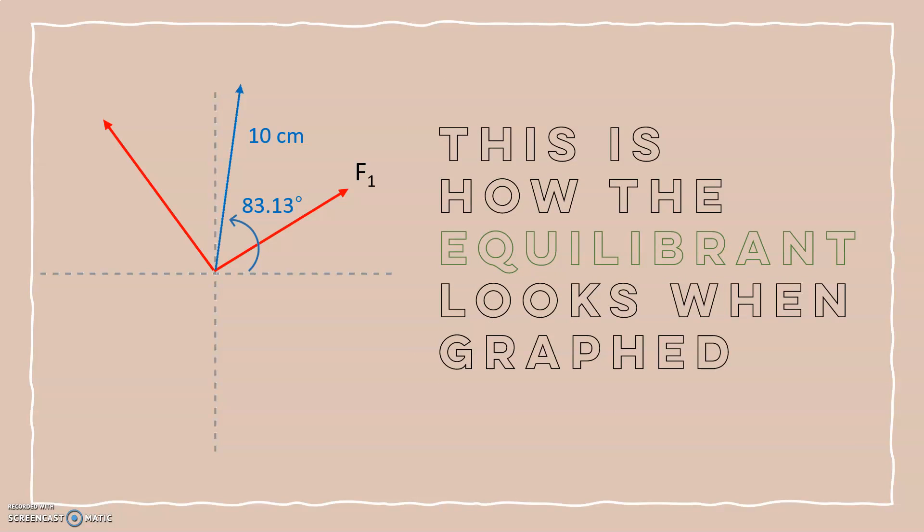This is how the equilibrium looks like when graphed. As you can see, we have our rotation of 263.13 degrees and we have our magnitude of 10 centimeters.